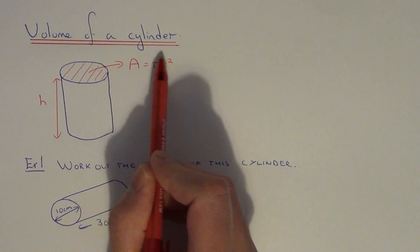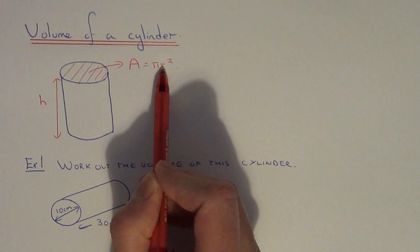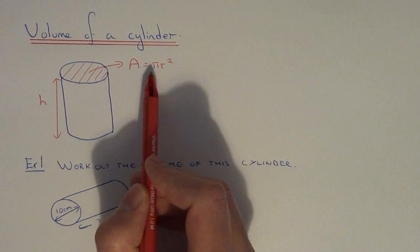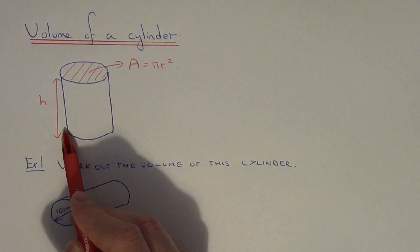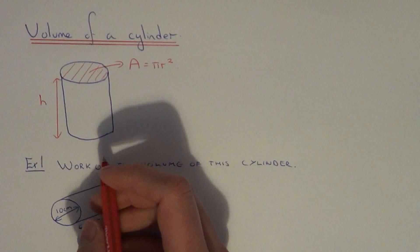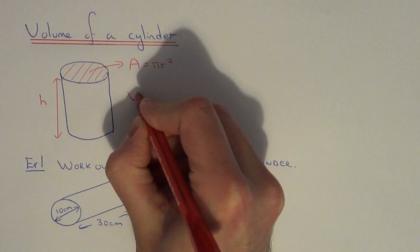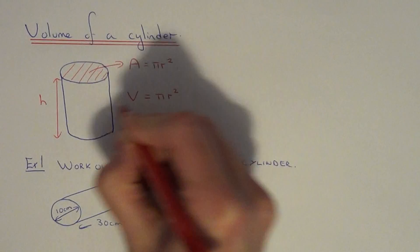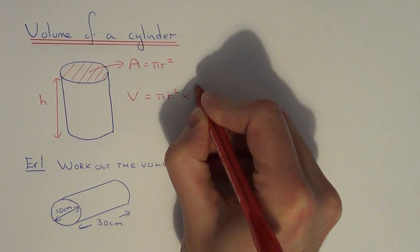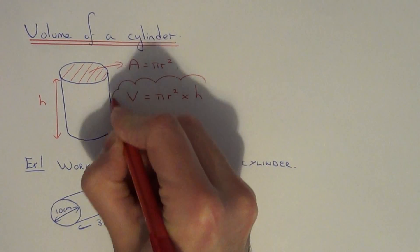The formula for the area of a circle is pi times radius squared. Once you have this cross sectional area, you then can multiply this answer by the height. The formula for the volume will be pi r squared times by the height of the cylinder.